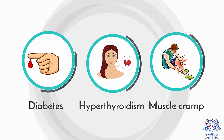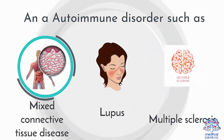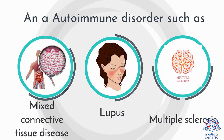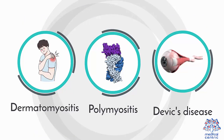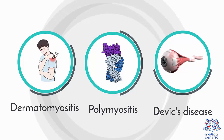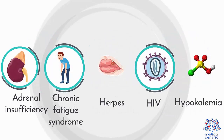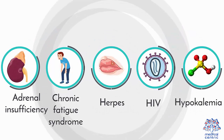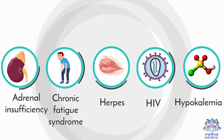Hyperthyroidism, hypothyroidism, muscle cramps, autoimmune disorders such as mixed connective tissue disease, lupus, multiple sclerosis, dermatomyositis, polymyositis, Devic's disease, adrenal insufficiency, chronic fatigue syndrome, herpes, HIV, and hypokalemia.